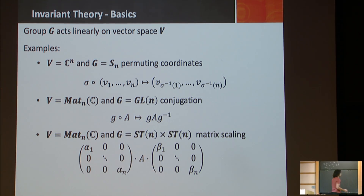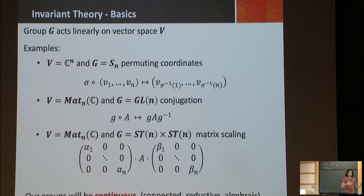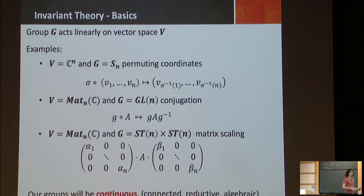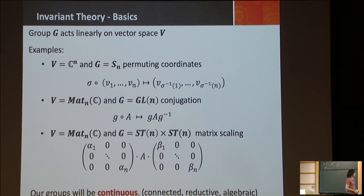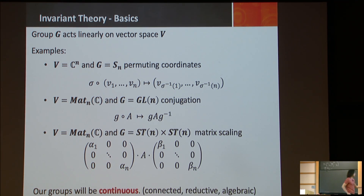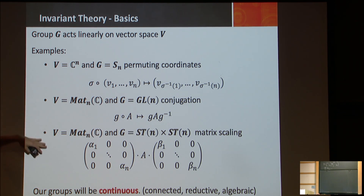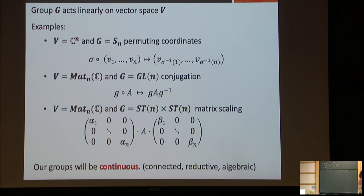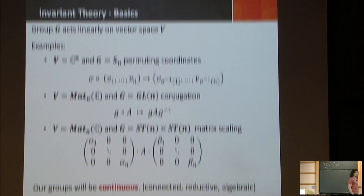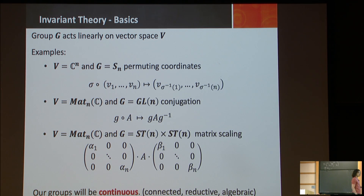For this talk, all of our groups will be continuous — connected, reductive, and algebraic groups. But you should just think of continuous groups. These bottom two groups are the ones we'll study. The permutation group is discrete, so we're not going to study that one.